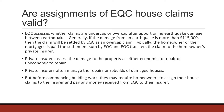EQC makes an initial assessment of whether a claim is under cap or over cap, and so far about 25,000 claims have been assessed as over cap and have gone to private insurers. Private insurers then send out their engineers and geotechnical people and assess the damage as either economic to repair — in which case they repair it or cash settle on the basis of repair — or uneconomic to repair, in which case it's a managed rebuild or cash settled on the basis of a rebuild.